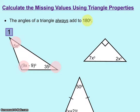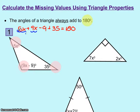In question number one, we will be adding those three angles together and setting up an equation: 5x plus 9x minus 9 plus 35 equals 180. We will be adding like terms in this problem. We take the 5x and 9x and add them together for 14x. Then we take the negative 9 and the 35, add those together for 26. That totals up to 180.